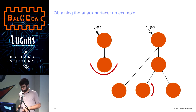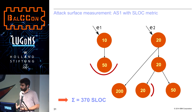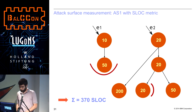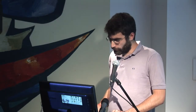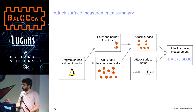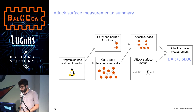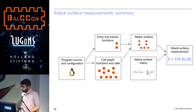You obtain a subgraph of the kernel call graph, which you can simply call the attack surface. Then, as previously mentioned, you just have to apply traditional code quality metrics, which can be the number of lines of code. In this example, we end up with 370 lines of code. So to summarize: we start with our program source and configuration — in this case the Linux kernel for a given configuration. From there, we derive entry and barrier functions, and we also derive a call graph. With these two, we can create a subgraph — the attack surface — and by picking a nice metric, we can obtain a measurement we can use for comparing different approaches.